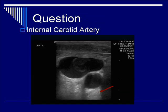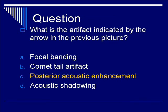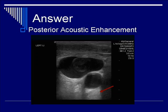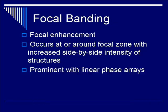Look at this picture — the red arrow is pointing to the hypoechoic signal. The correct answer is C, posterior acoustic enhancement. As you can see, because the blood-filled internal carotid artery has less attenuation, the signal distal to it will be greater than the surrounding structures.